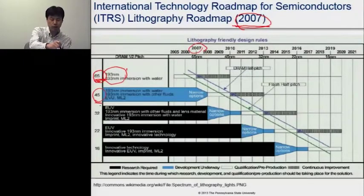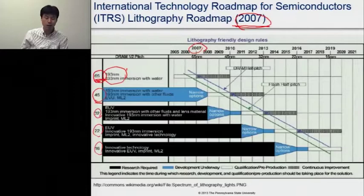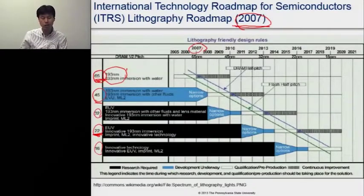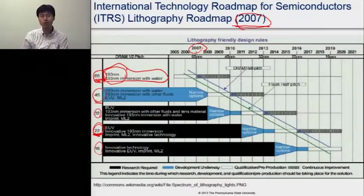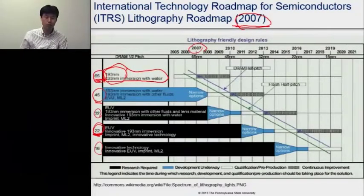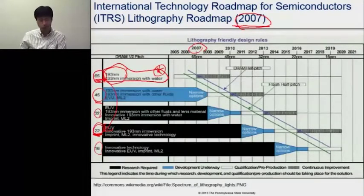From that point, to achieve much smaller feature sizes, other advanced lithography techniques were expected to be needed. But interestingly, right now we are at 22-nanometer technology, and this scanner is still being used to achieve that small feature size. We will discuss later in the course why people still use this scanner and how it has been improved to achieve 20-22 nanometer feature sizes.